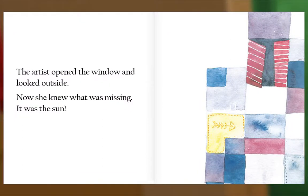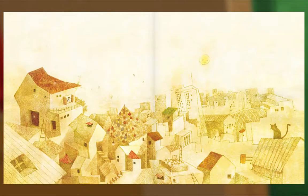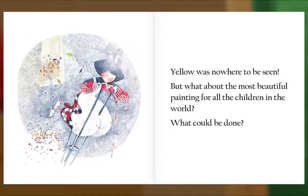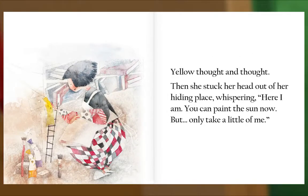The artist opened the window and looked outside. Now she knew what was missing — it was the sun. Yellow! She needed yellow to paint the sun. Do you know where yellow was hiding? Yellow was nowhere to be seen. But what about the most beautiful painting for all the children in the world? What could be done? Yellow thought and thought, then she stuck her head out of her hiding place, whispering: